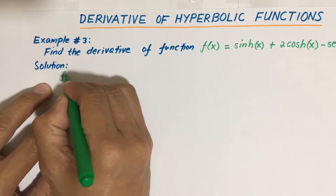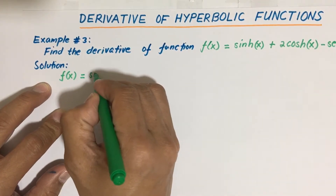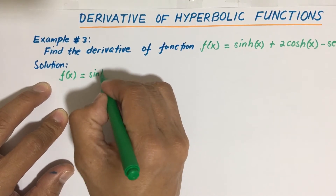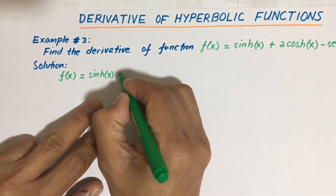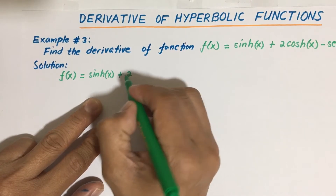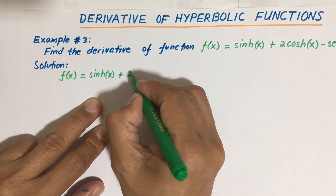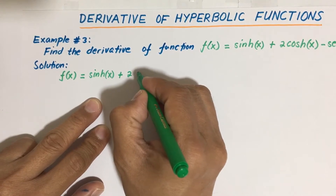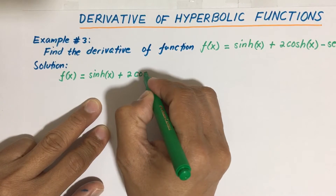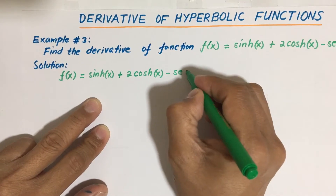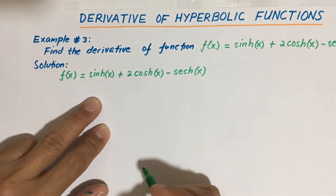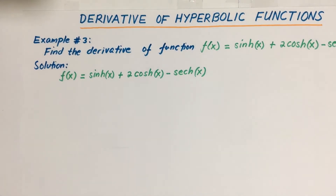Our first step is to copy the given function. We have f(x) equal to hyperbolic sine of x — and I will show you it's okay if you put x inside the parentheses or you may opt to not put it inside — plus twice the hyperbolic cosine of x, then minus hyperbolic secant of x. We have here different hyperbolic functions, so let us recall the formulas.